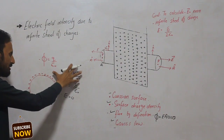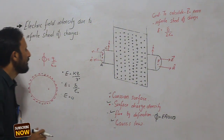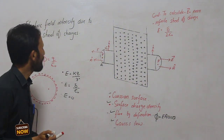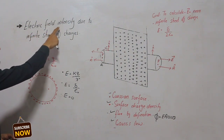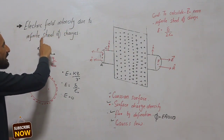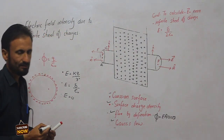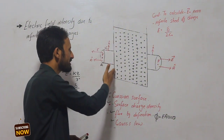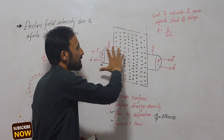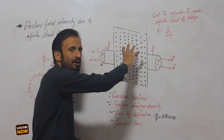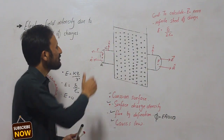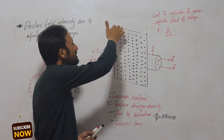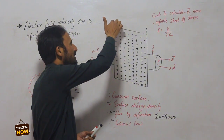Now we have another application: electric field intensity due to an infinite sheet of charge. The infinite sheet of charge has a positive charge distributed on it. This infinite sheet extends in all directions.